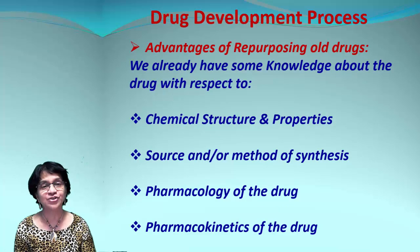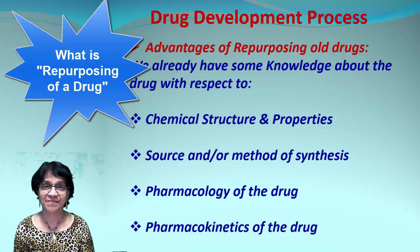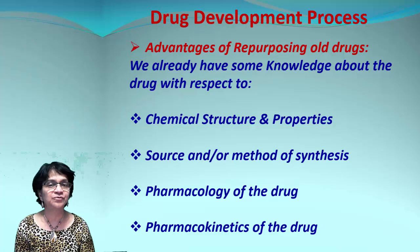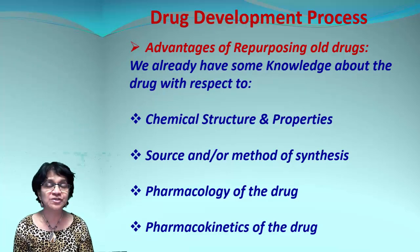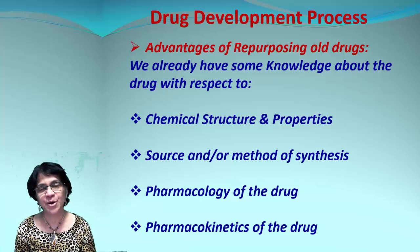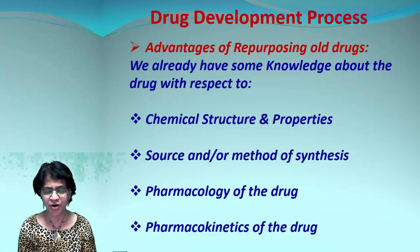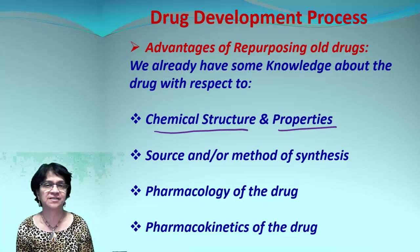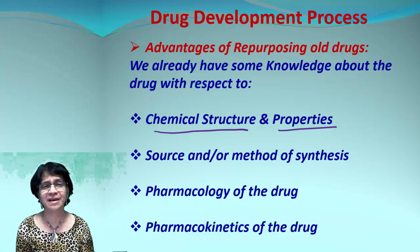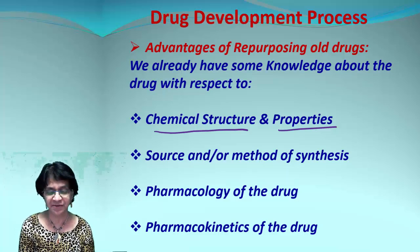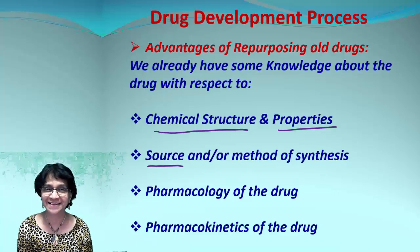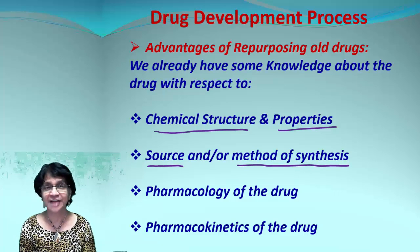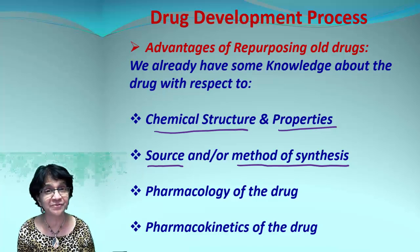What we can do is start testing old drugs for new purposes — that's called repurposing. A drug prescribed for one purpose may work for another. The advantages of using an old drug include: we already know the chemical structure, the physical properties, solubility, bioavailability, LD50, and more. If it's a natural product, we know the source; if it's synthetic, we already know how to synthesize it, which makes things much easier.